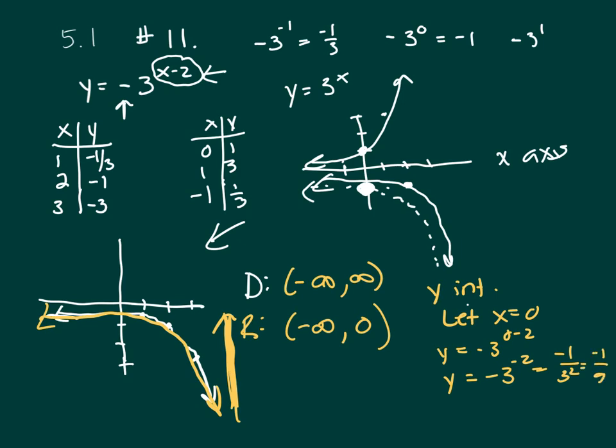And the equation, the horizontal asymptote. Well the horizontal asymptote is a line the graph gets closer and closer to but never reaches, and this graph gets closer and closer to the x-axis but never goes across it, and the equation for the x-axis is y equals 0 because everywhere on the x-axis the y values are zeros.